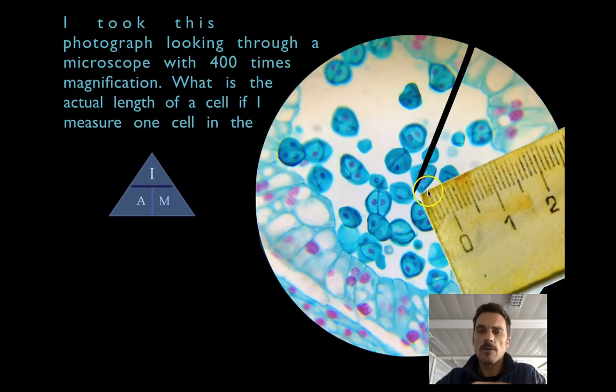I measured it out with a ruler and I found that one cell was 0.4 centimeters across. And I want to know how large that cell is then in real life.